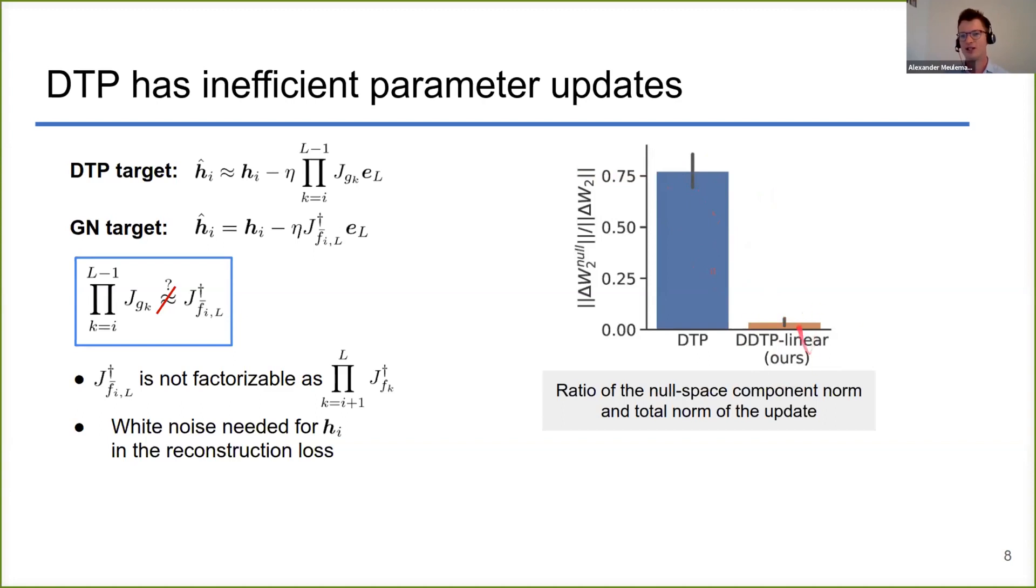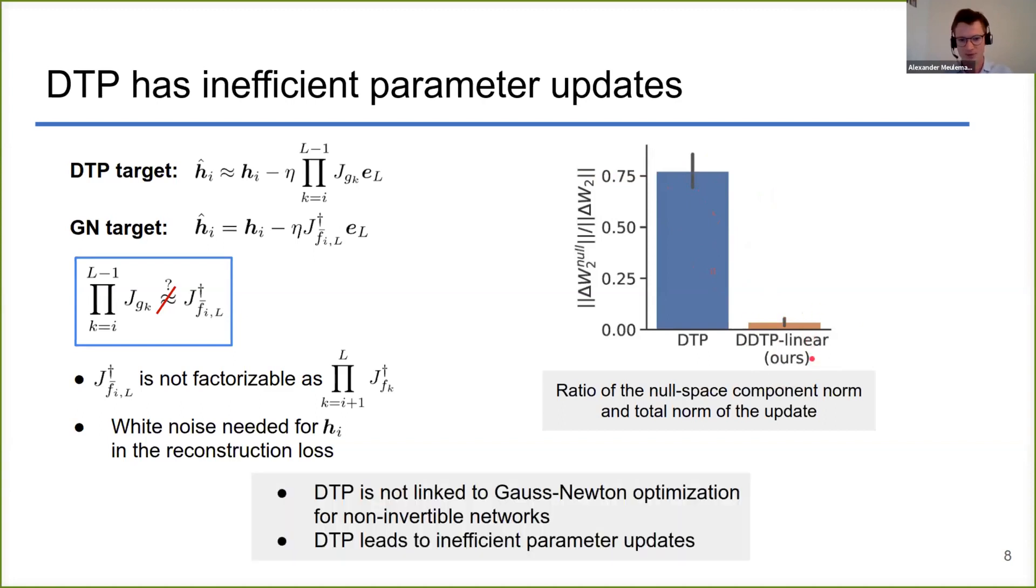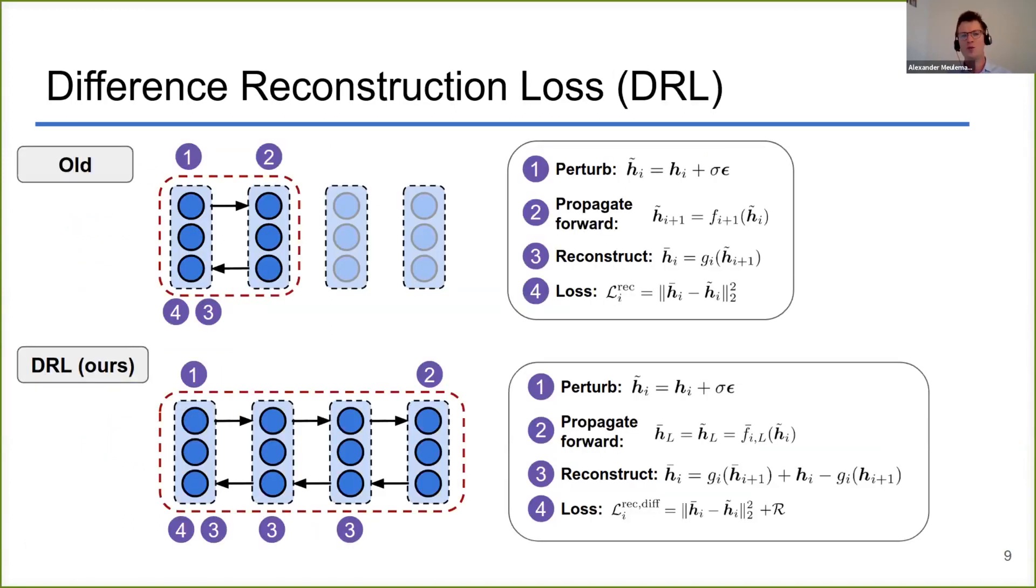As a small summary, we showed for difference target propagation that it's not linked to Gauss-Newton anymore and that it leads to quite inefficient parameter updates. Now we solve both of these problems by introducing a new reconstruction loss for training the feedback parameters. This new difference reconstruction loss re-establishes the connection with Gauss-Newton optimization.